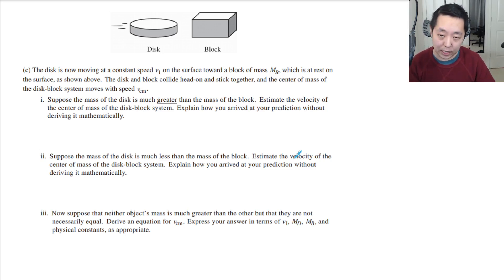Think of like a bowling ball, and the block is like an ant that's not going to get squished. Estimate the velocity of the center of mass. If a bowling ball hits an ant, it's not going to slow down, so the center of mass is going to be approximately equal to V1.